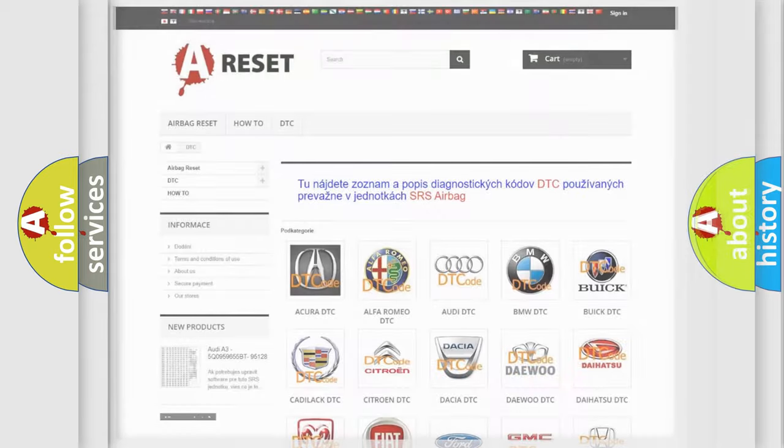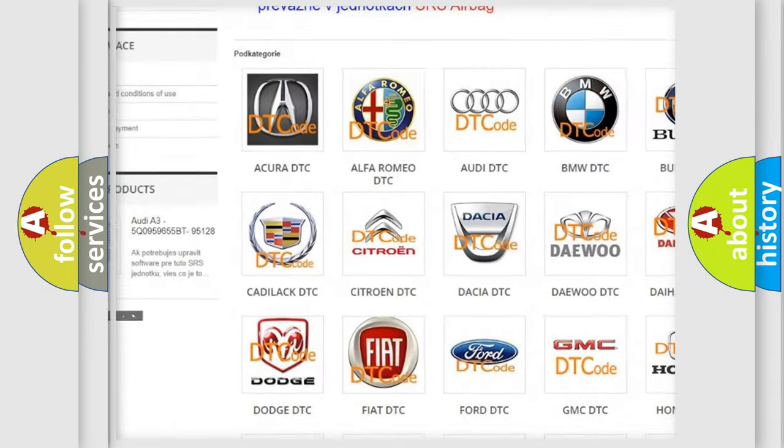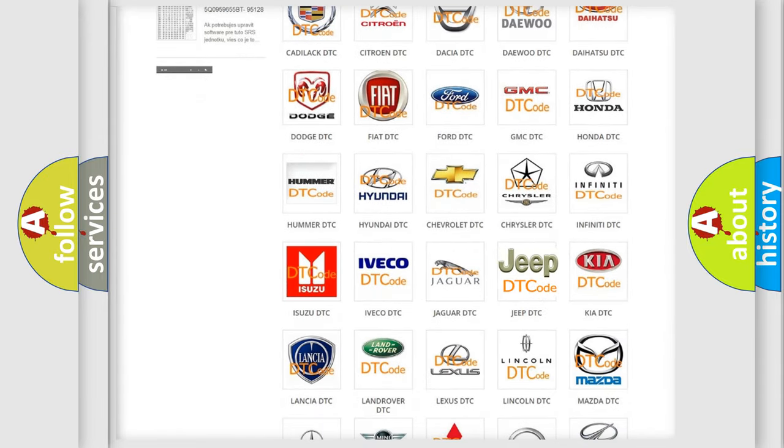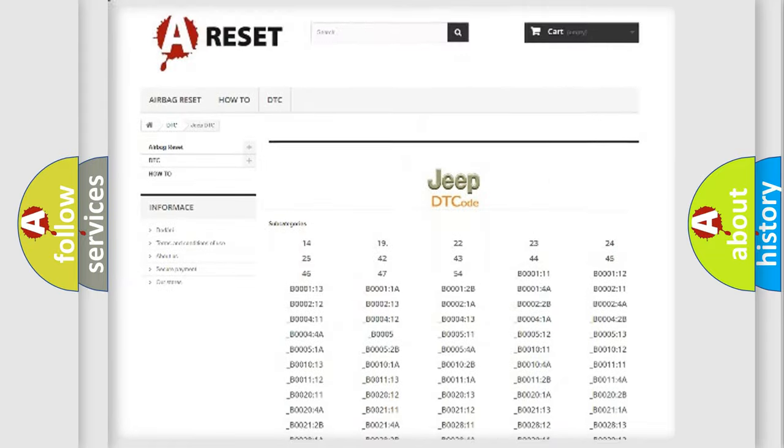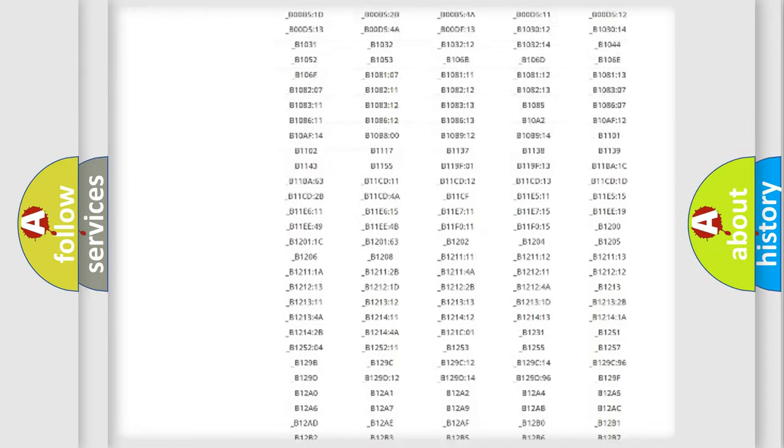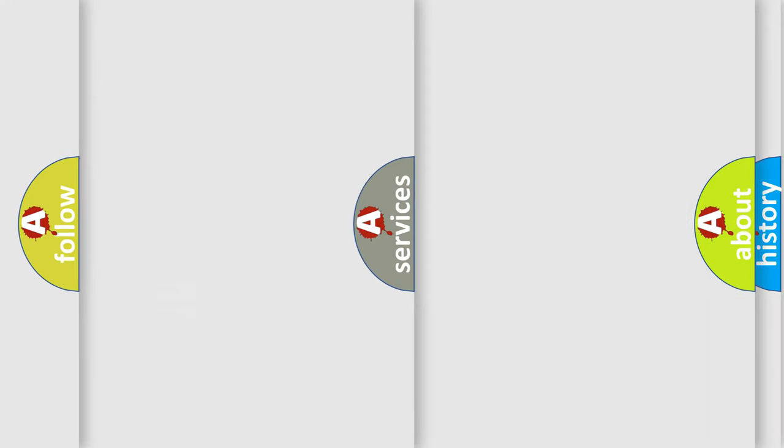Our website airbagreset.sk produces useful videos for you. You do not have to go through the OBD2 protocol anymore to know how to troubleshoot any car breakdown. You will find all the diagnostic codes that can be diagnosed in Jeep vehicles, and also many other useful things.